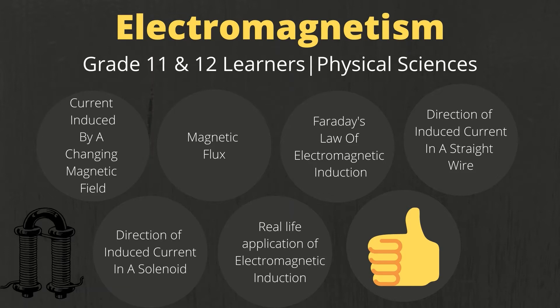In this lesson, we are going to be talking about: one, how current can be induced by a changing magnetic field; two, the magnetic flux; three, Faraday's law of electromagnetic induction; four, the direction of the induced current in a straight wire using the right-hand rule; five, the direction of the induced current in a solenoid using the right-hand rule; and lastly, real-life applications of electromagnetic induction.